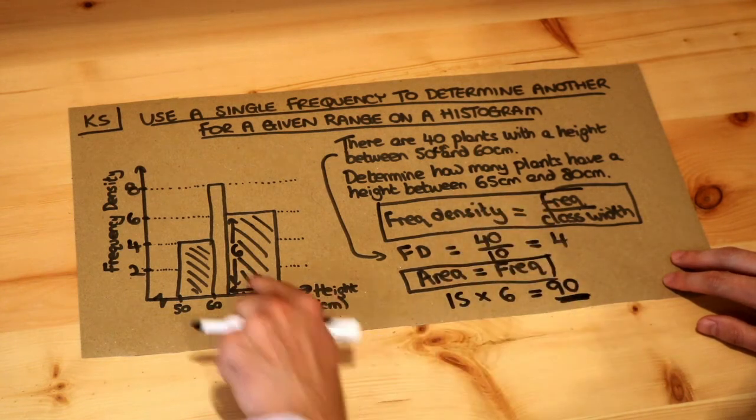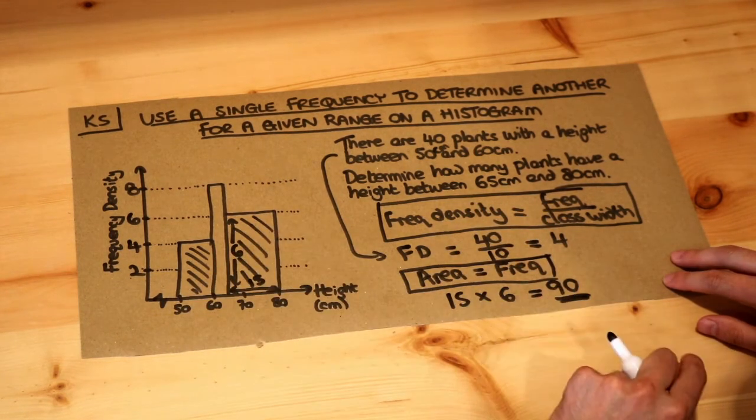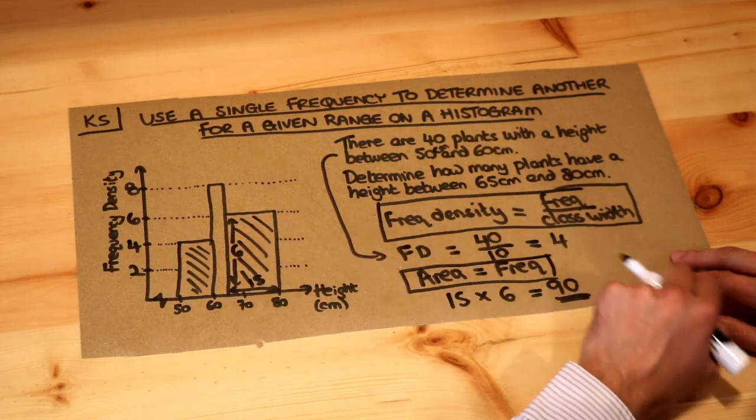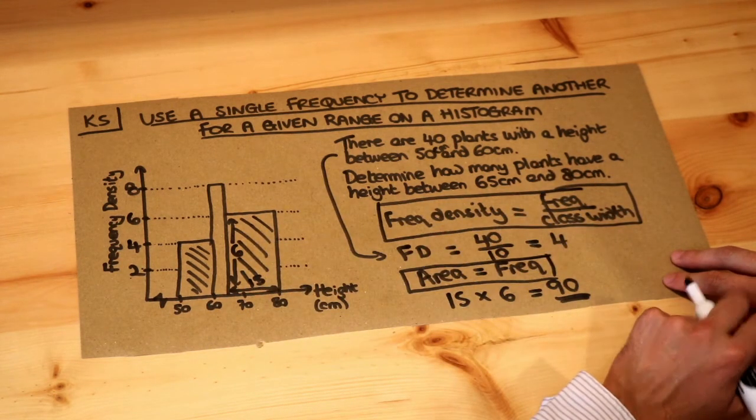And that's the final answer. So the area of this bar is 90, so therefore the number of plants represented by that bar in the histogram is 90 plants.